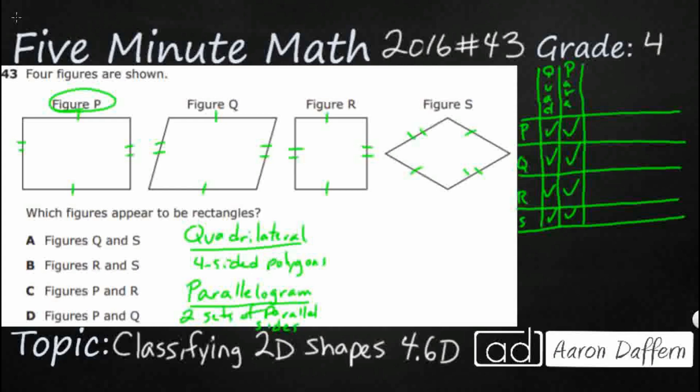So underneath quadrilateral we have parallelogram. I'm going to kind of draw an arrow because underneath parallelogram, we have a special type of parallelogram. This is what we're looking for: a rectangle. So we need to know that all rectangles are quadrilaterals. All rectangles are parallelograms, but they're a special type of parallelogram that have four right angles. Or you can call it four square corners or four 90 degree angles.